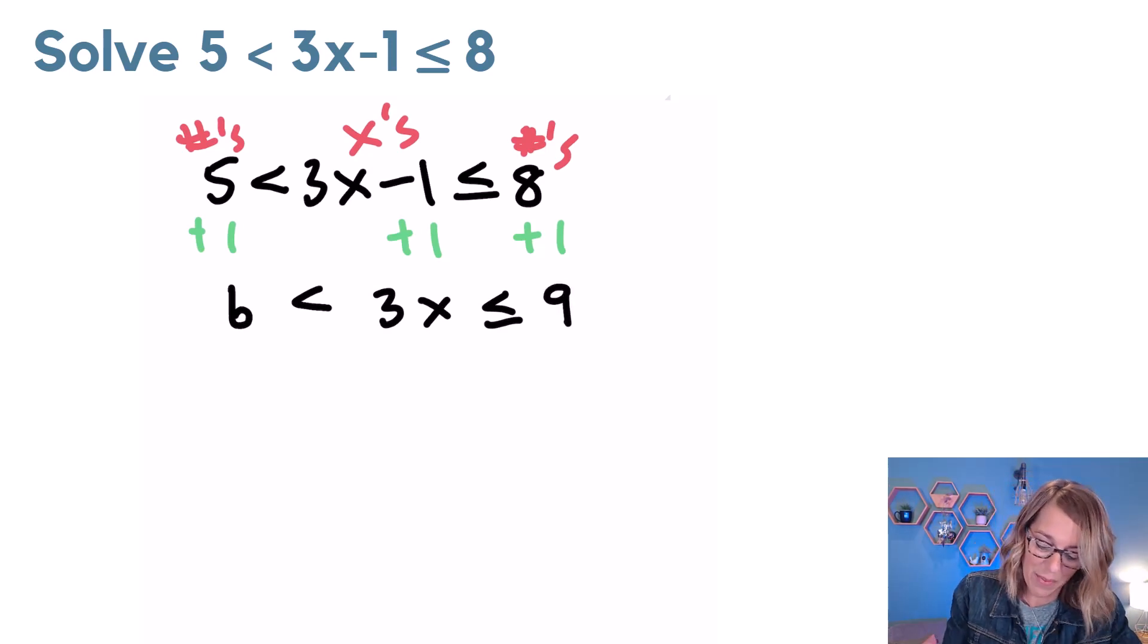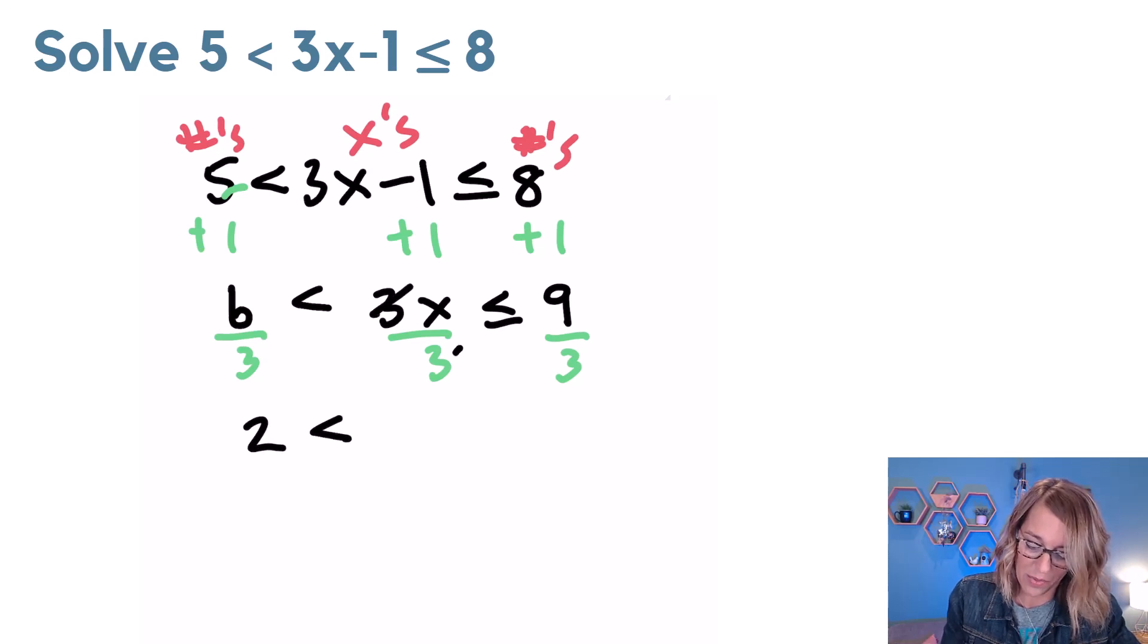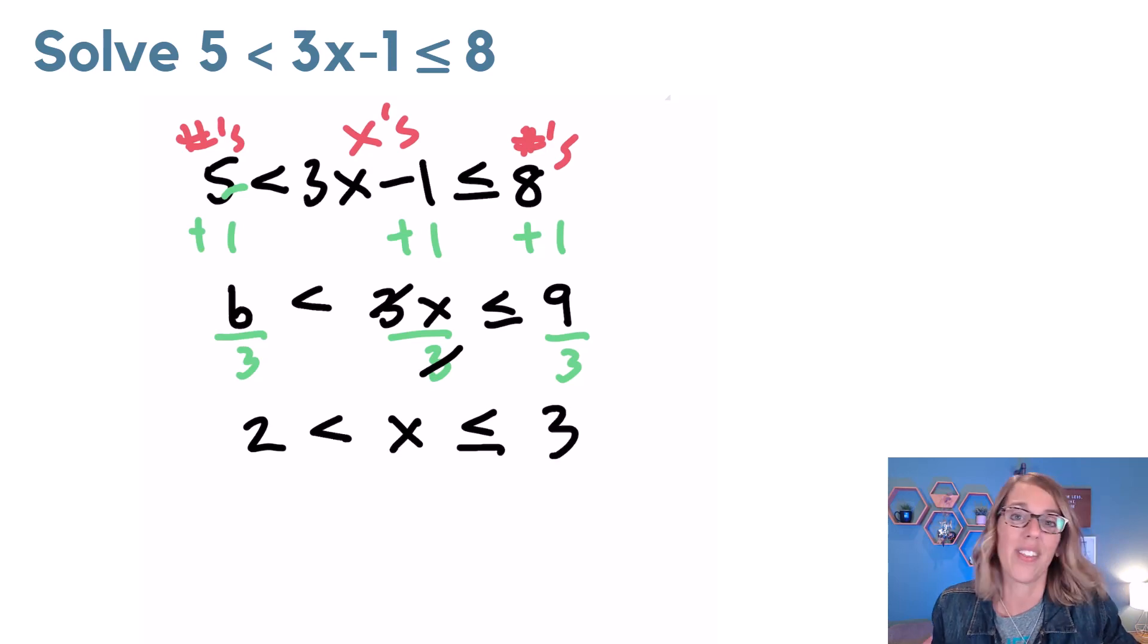Next, I want to divide everybody by a 3. It's positive, so I don't need to worry about reversing those symbols. And I end up with 6 divided by 3, which is 2 less than those threes cancel, I get an x less than or equal to a 3.